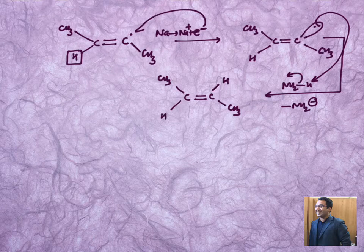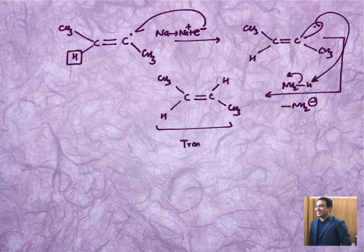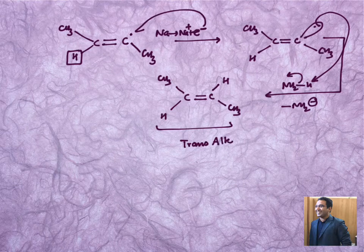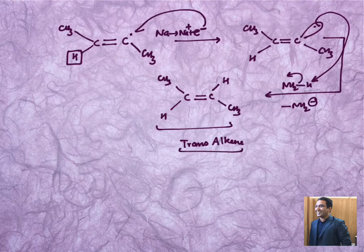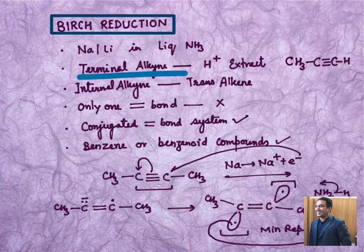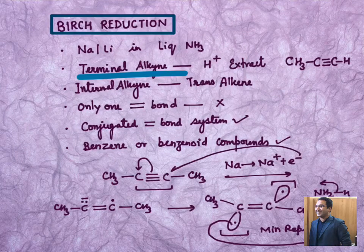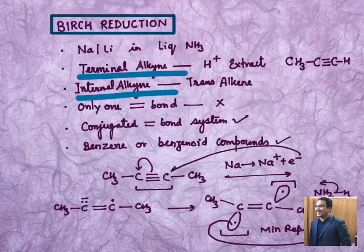This trans alkene which is found here, this is a trans alkene, confirms that we have performed Birch reduction on a triple bond which is, see check the structure, which is an internal alkyne. So it is giving you trans alkene.